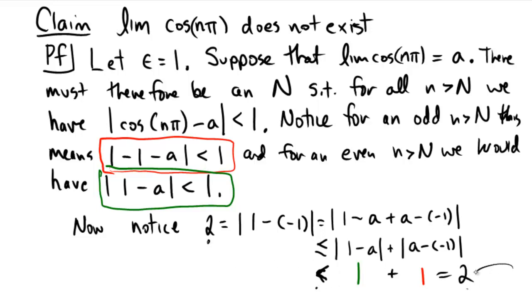And that, of course, is a contradiction. So the existence of that limit causes a contradiction. It causes 2 to be less than 2. And therefore, we get to conclude that the limit does not exist. And that completes the proof.